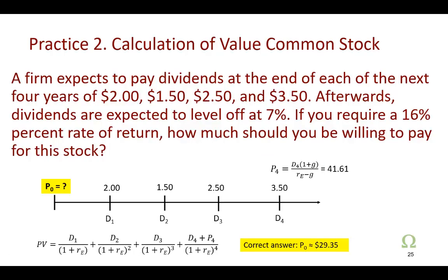So, here's a little work for you. It says a firm expects to pay dividends at the end of each of the next four years. So, the values are, the cash flows are given here. You don't have to calculate them. Afterwards, we expect dividends to level off at 7% into the foreseeable future. And if your cost of equity, your required rate of return on equity is 16%, then, how much would you be willing to pay? Well, I've laid it out here for you on a nice little timeline. And here's your working formula right here. And if you do this right, your P4, using the constant growth model, should come out to be 41.61. And when you put it all together in this pot, your correct answer should come out to be about $29.35.